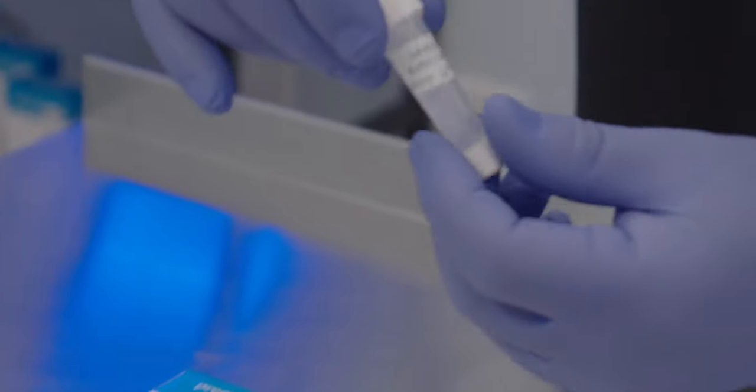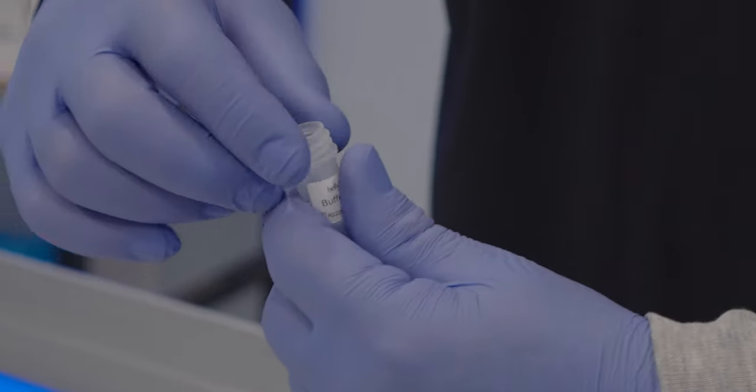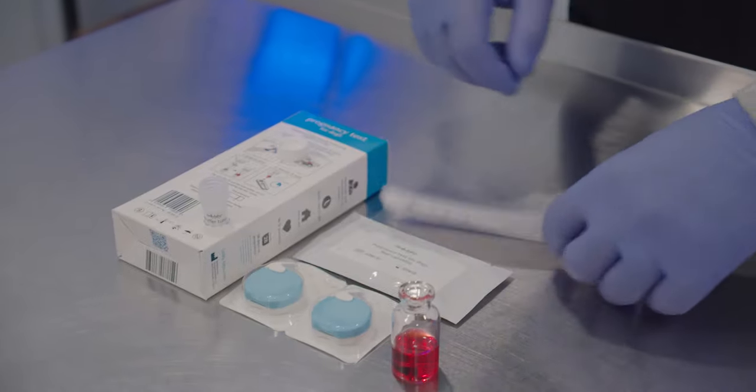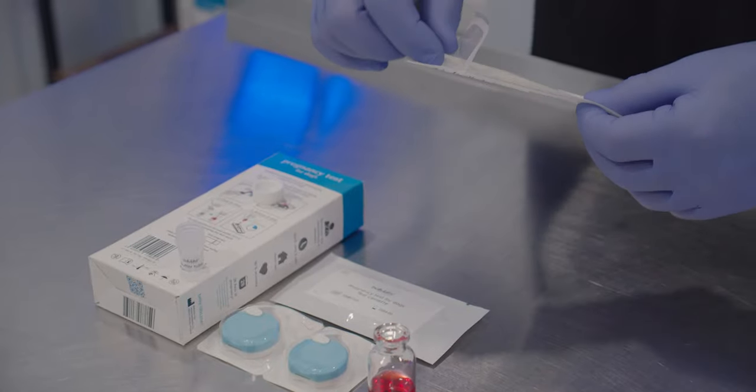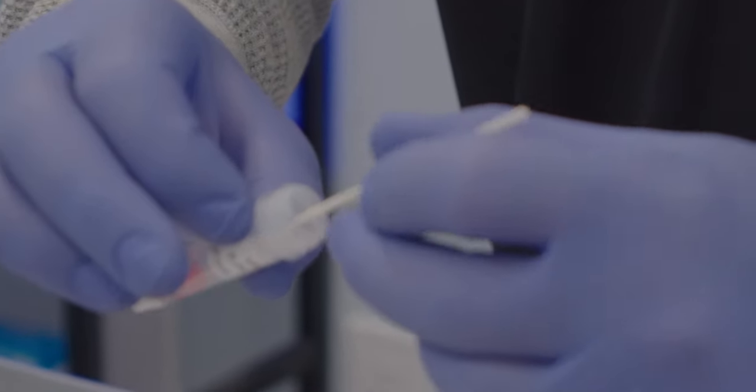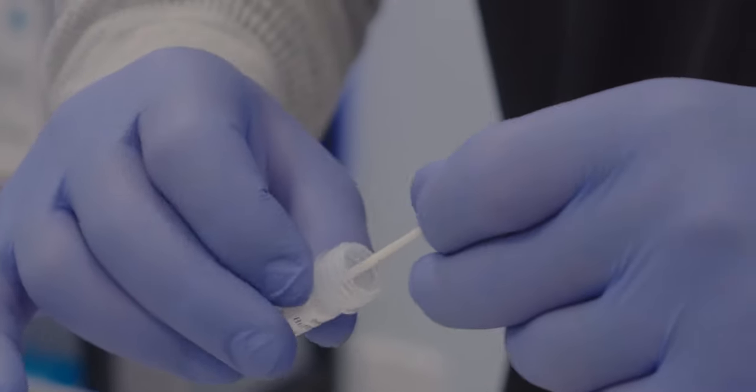After you've collected your sample, take the cotton swab and insert it into the buffer tube. Make sure to spin three to five times around the buffer tube and finally break the cotton swab off and close the cap back on the buffer tube.